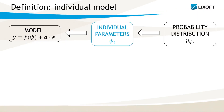The first task in Monolix estimates the population parameters, which characterize the population. But often we would also like to get the parameter values for each individual present in the dataset. In the population approach, we assume that individual parameters come from a probability distribution p, which describes the variability of the parameters between individuals in the population.